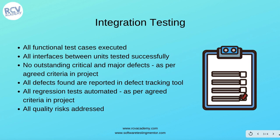For integration testing, the criteria could include: all functional test cases should be executed; all interfaces between units should be tested, ensuring all integration points are tested successfully. There shouldn't be any critical and major defects — this can change as per the team's agreement. Any defects identified should be reported in the defect tracking tool. All regression test cases should be automated as per the agreed criteria, and all quality risks should be addressed.